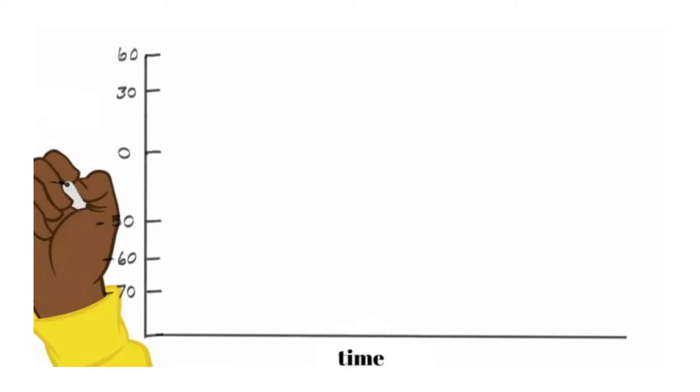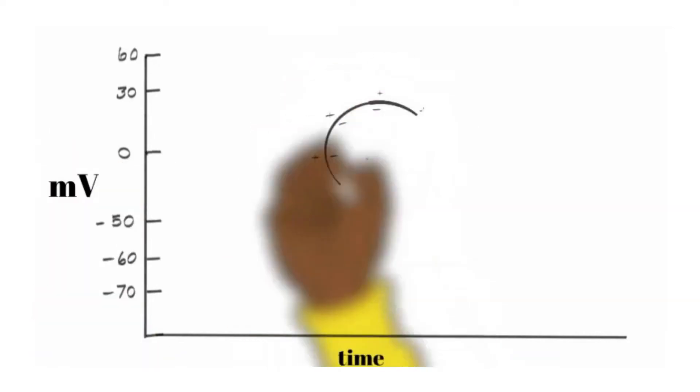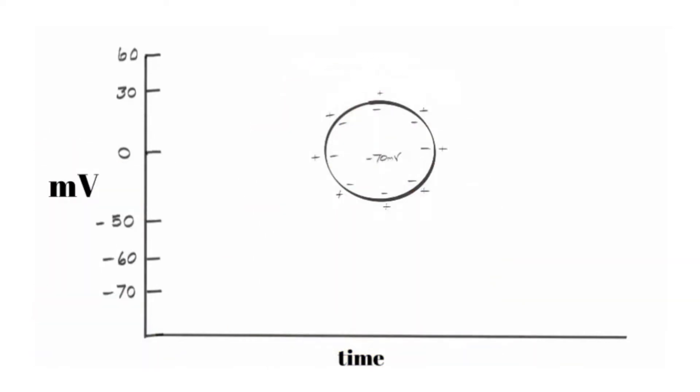Let's lay out a graph here. This graph on the x-axis is demonstrating time. On the y-axis, it's the charge or voltage of the cell. Keep in mind, the voltage is the difference in charge between inside the cell and outside the cell. At rest, most cells are going to be around negative 70 to negative 90 millivolts.